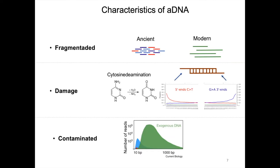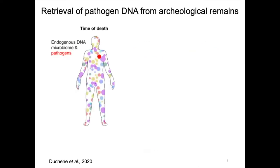This leads to erroneous C-to-T substitutions in the sequence data. In addition, the DNA recovered from archaeological remains is co-extracted with DNA from exogenous sources, like DNA from microorganisms and from people who handle the remains after excavation. Working with ancient DNA can be very problematic, but at the same time it can be a valuable source of information, since it's possible to retrieve DNA from pathogens that infected humans during their lifetime.